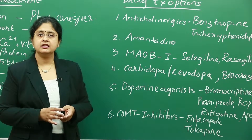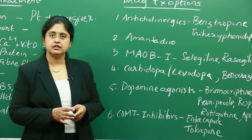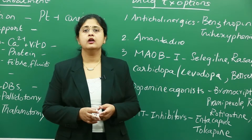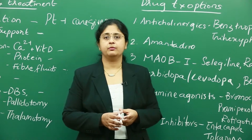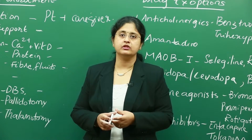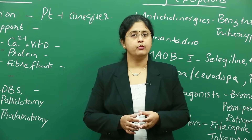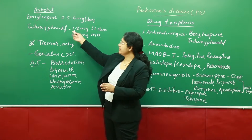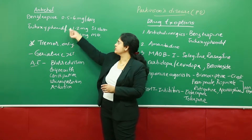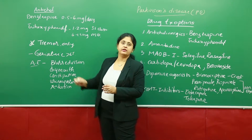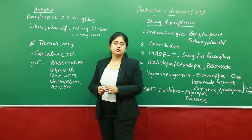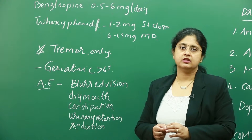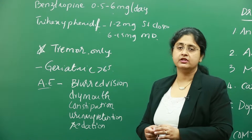Let us now go through these agents class by class and review the important parameters — most importantly, understanding the place in therapy: where exactly we are going to use these agents and what we monitor. We start with the first class, anticholinergics. The two agents are benztropine and trihexyphenidyl. These are quite older agents that are used in Parkinson's disease.